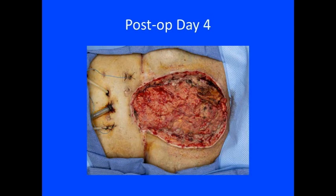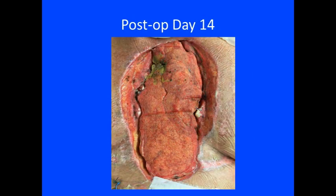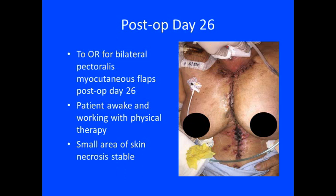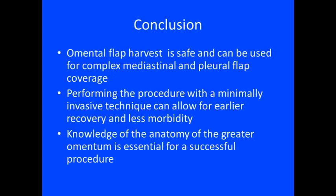Here we can see the wound on postoperative day 4 after wound vac removal. Here we can see the wound on postoperative day 14 showing good granulation tissue. By postoperative day 26, the patient had already undergone a bilateral pectoralis myocutaneous flap, was awake and working with physical therapy, and only demonstrated a small area of skin necrosis which was stable on closure.